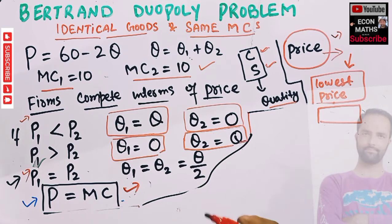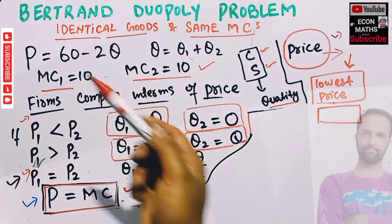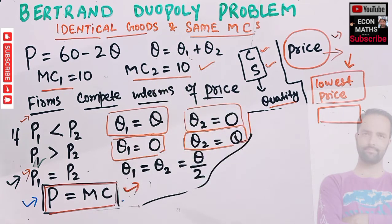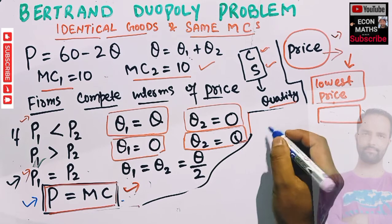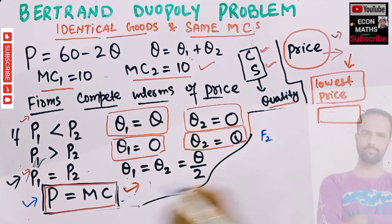The only equilibrium condition is that price equals marginal cost. When we have identical goods and the same marginal cost in the Bertrand duopoly, price equals marginal cost. How do we explain this? Let us work through an example.